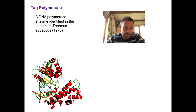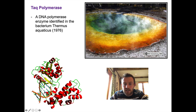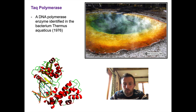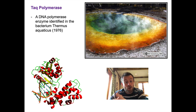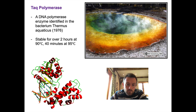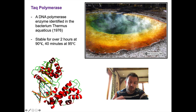It's a naturally occurring DNA polymerase enzyme identified in a bacterium called Thermus aquaticus in 1976. This bacterium lives in places like Grand Prismatic Spring in Yellowstone National Park — really hot temperatures in the 80s and 90s degrees centigrade. Because this bacterium is used to hot temperatures, its proteins are thermostable. This enzyme is stable for over two hours at 90°C, maintaining its enzymatic activity.